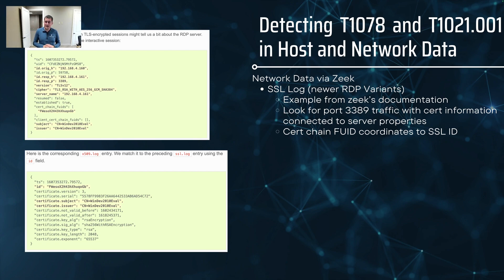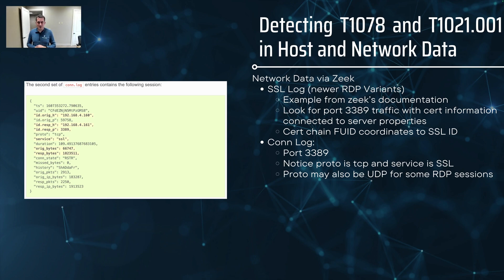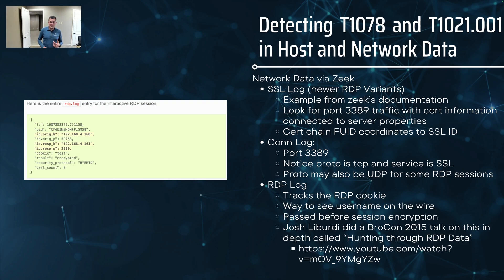RDP doesn't have to run on 3389 — some vendors run it on other ports, so if you don't know the port, this might not be as helpful. But if it's on 3389, there is contextual information you can use to determine this is probably RDP and whether it should be happening between these two boxes. Another one is the conn log — the connection log for Zeek. You can look for port 3389 where proto might be TCP and service might be SSL. For RDP, it's important to know it can also run on UDP, so don't just look for TCP 3389 — also look for UDP. Connection length, amount of data transferred, and other data can help you find this.